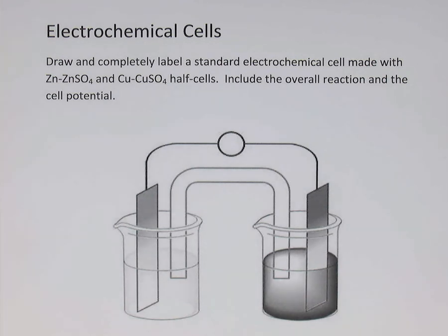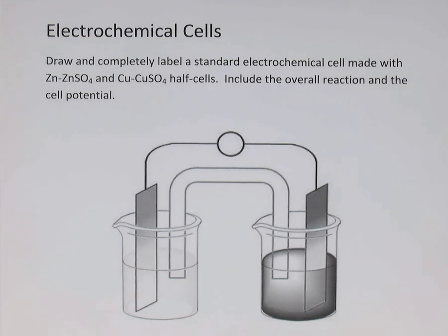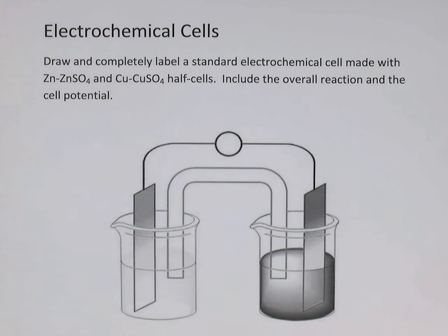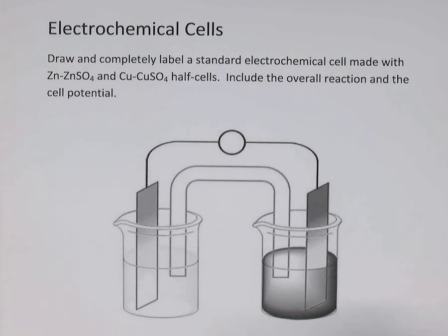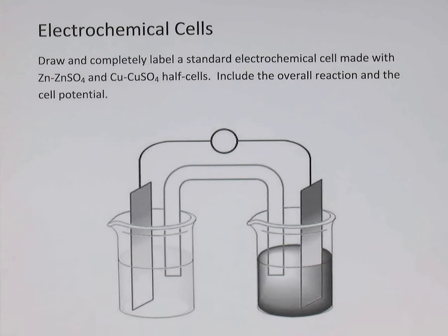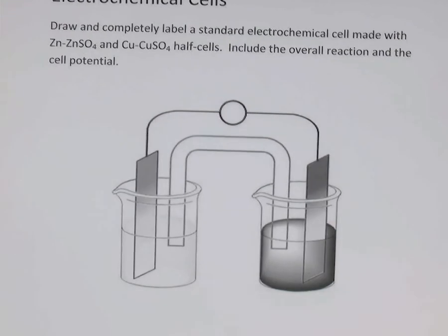In this video we're going to take a look at a typical electrochemical cell question on a test or exam for grade 12 chemistry. We're asked to draw and completely label a standard electrochemical cell made with a zinc-zinc sulfate half cell and a copper-copper sulfate half cell, and include the overall reaction and cell potential. On a test or exam I would give you a list of things to include in your diagram for labeling, but here we'll just do it together.